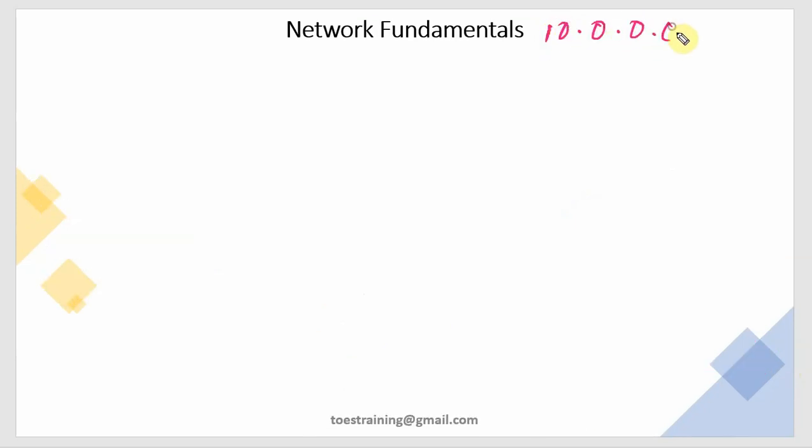So our prefix length is 10.0.0.0 slash 15. We'll calculate the subnet mask first. The subnet mask: how many bits are on? Because of prefix 15, we'll turn on 15 bits. So: 1, 2, 3, 4, 5, 6, 7, 8 in the first octet, then 1, 2, 3, 4, 5, 6, 7 in the second octet.